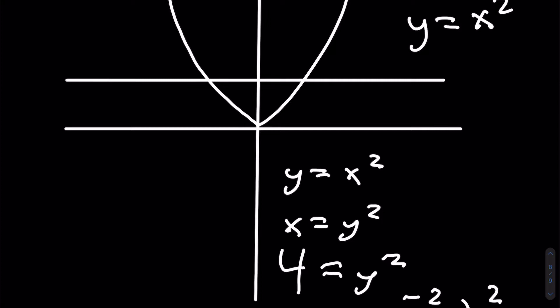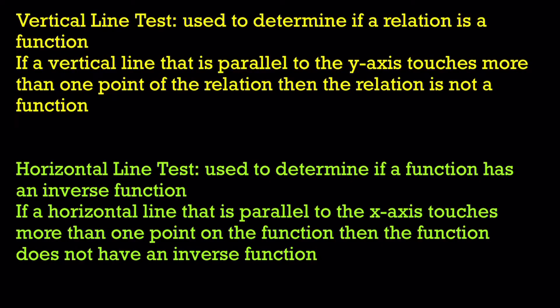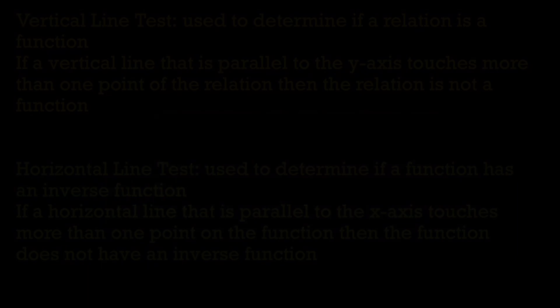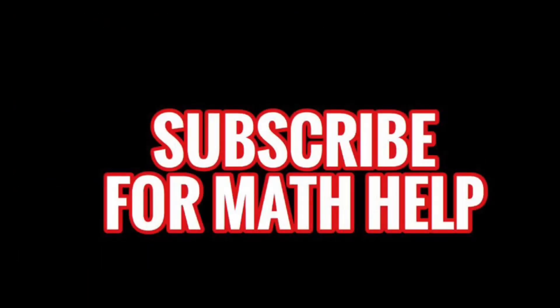The vertical line test is used to determine if a relation is a function. If a vertical line parallel to the y-axis touches more than one point of the relation, then the relation is not a function. The horizontal line test is used to determine if a function has an inverse function. If a horizontal line parallel to the x-axis touches more than one point on the function, then the function does not have an inverse function. Thanks for watching and subscribe for more math help.